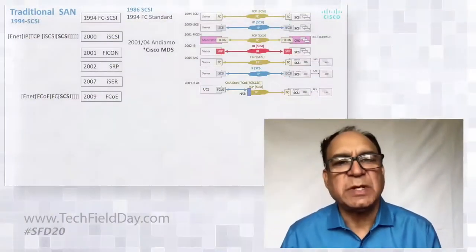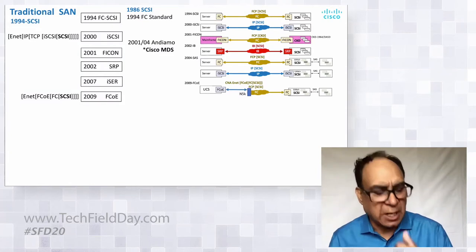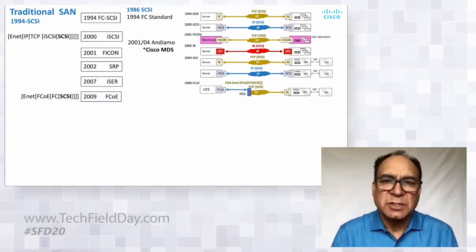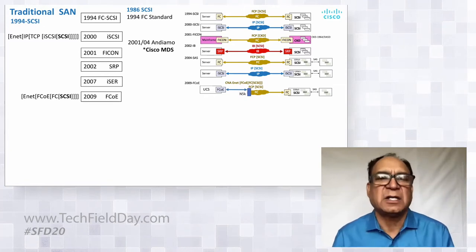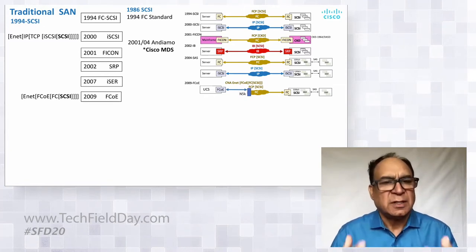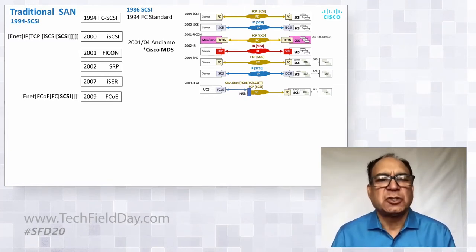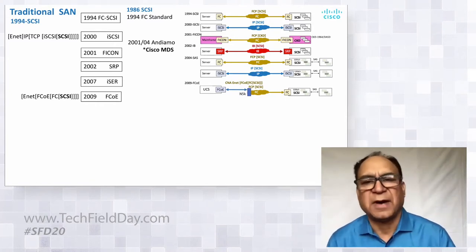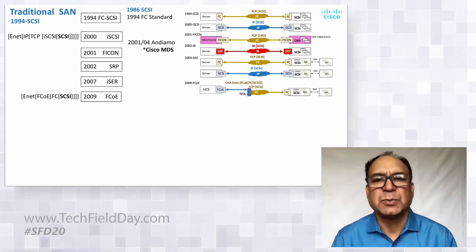If you look at the SAN, it has been evolving over the years. Back in 1994, Fibre Channel was designed specifically to do the SCSI protocol mapping. It simplified the architecture. Then later on, other transport options started to appear — iSCSI, and then IBM mapped FICON into the Fibre Channel transport.